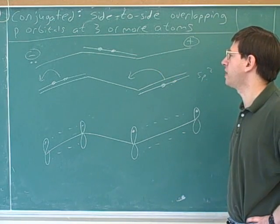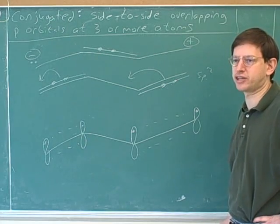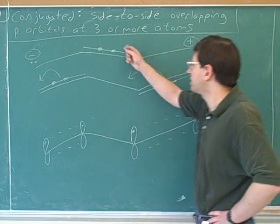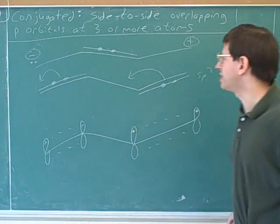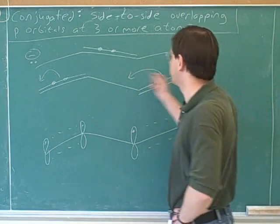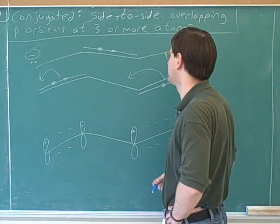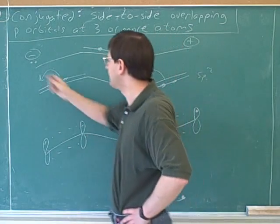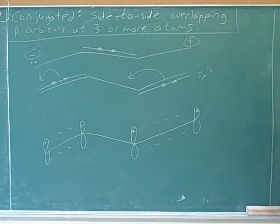And the different resonance structures are just a way to try to convey all the different places the electrons can be. The electrons can be here, here, or here. And there's another resonant structure where I move the electrons to the right. I could have also moved the electrons to the right and put the negative charge over here and the positive charge over here.